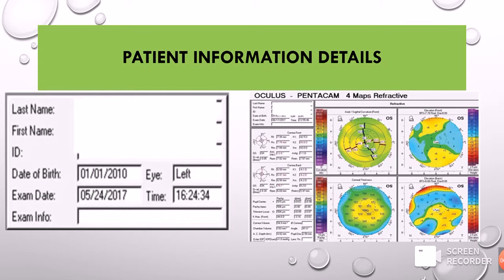The first thing we see in a printout is the patient information, which consists of the patient's name, patient ID, date of birth, age, exam date, time, and exam information if any. This is very important for patient identification and for comparison with the normal database, especially the age factor.